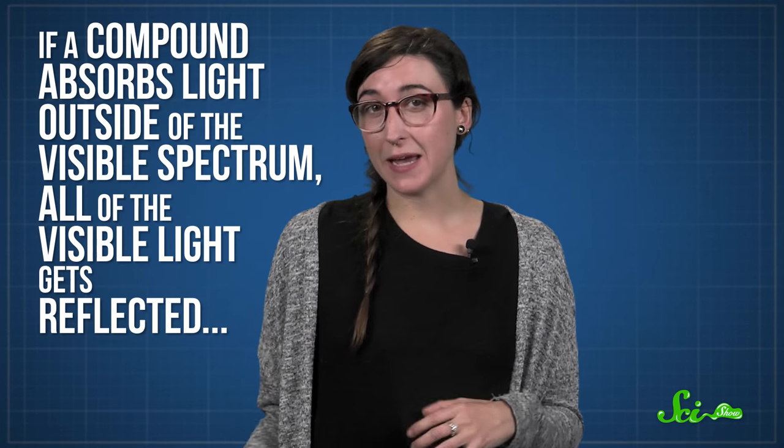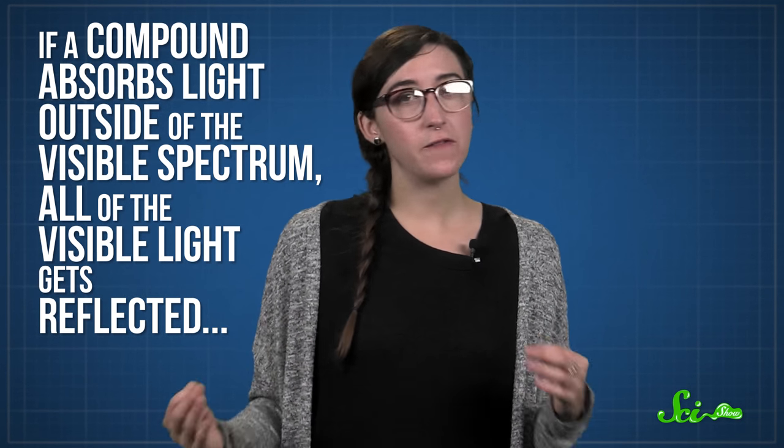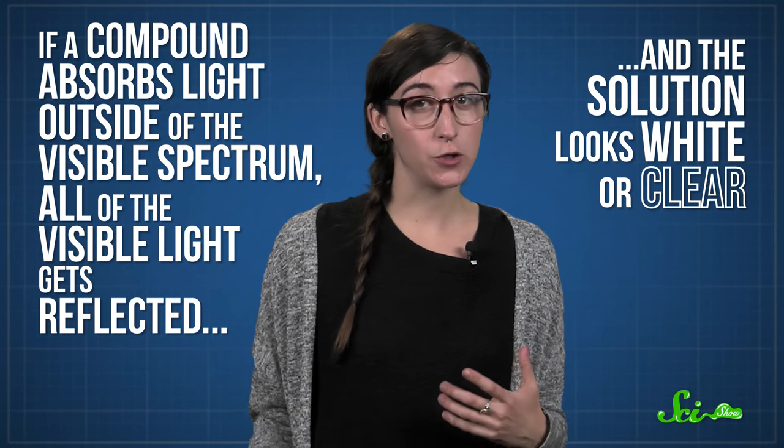If a compound absorbs light outside of the visible spectrum, all of the visible light gets reflected and the solution looks white or clear. That's why organic chemistry might as well be called 600 colorless compounds and how to draw them. Inorganic chemistry is where all the colors are. So the mixture of dissolved metals in Kawa Ijen's lake is what makes the water look vividly turquoise.